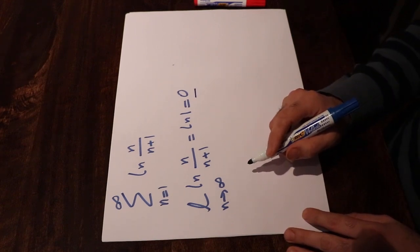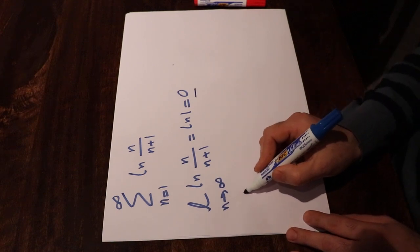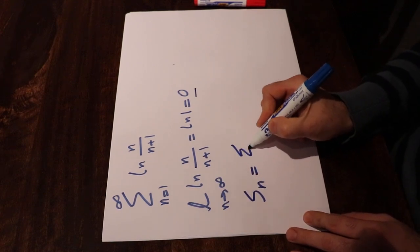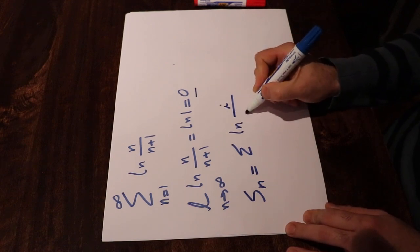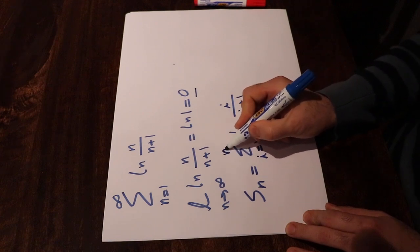So let's compute the partial sums of this series. So that is Sn equal to sigma ln i divided by i plus 1 when i changes from 1 to n.